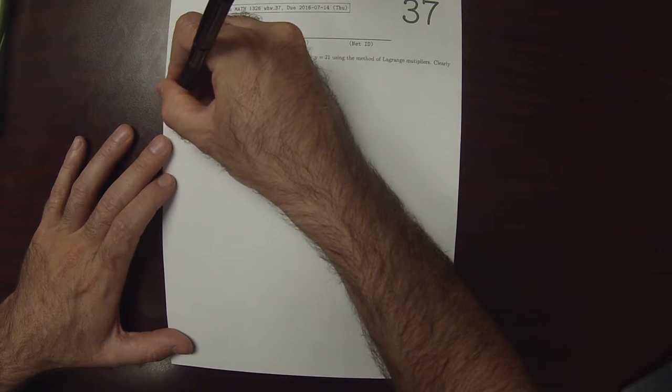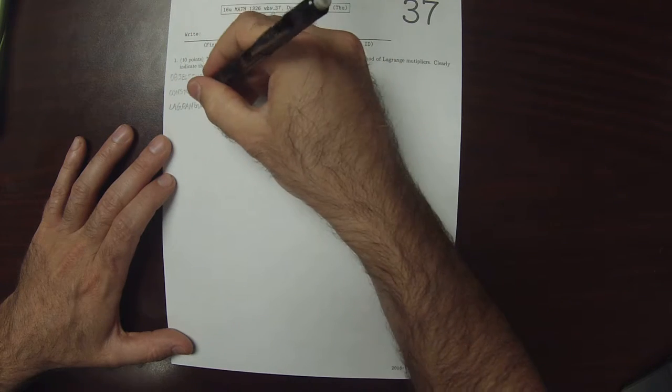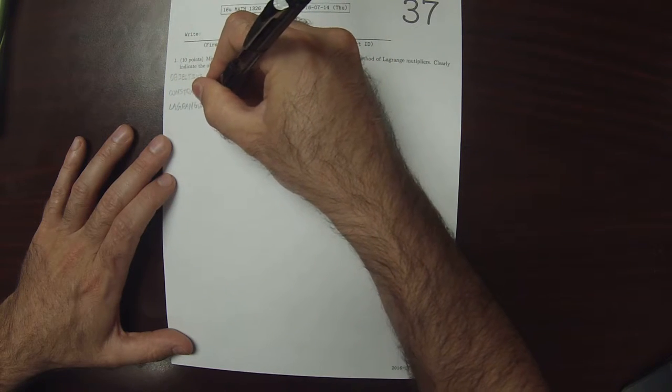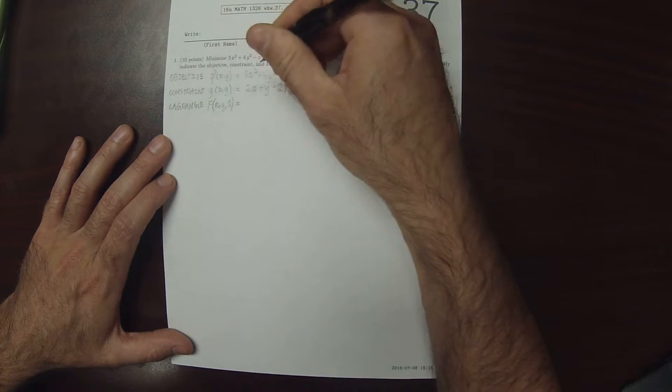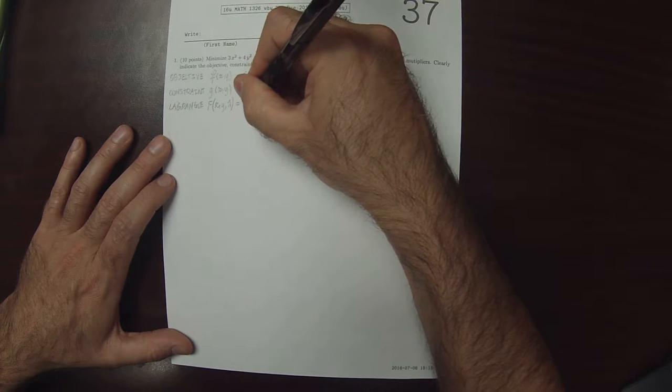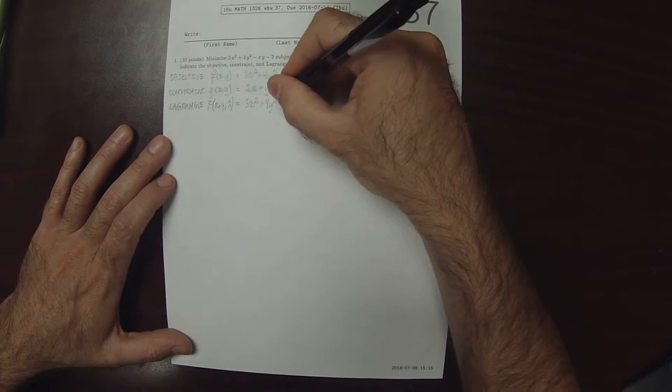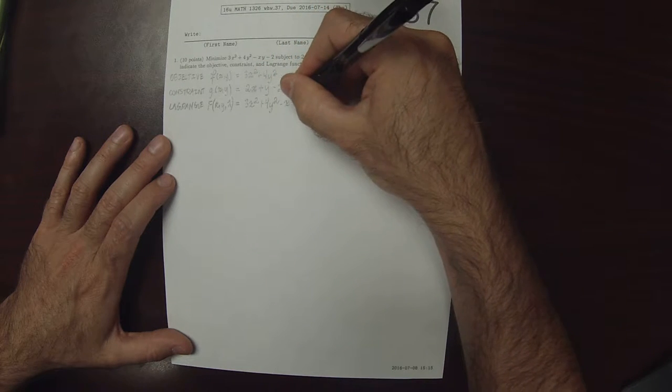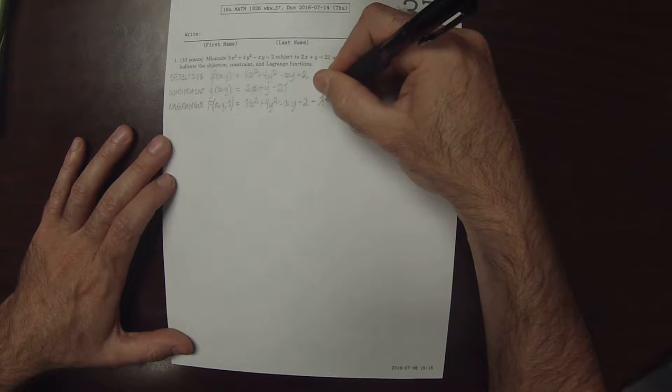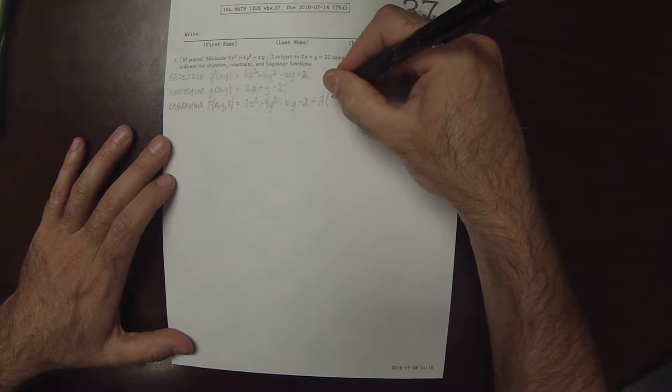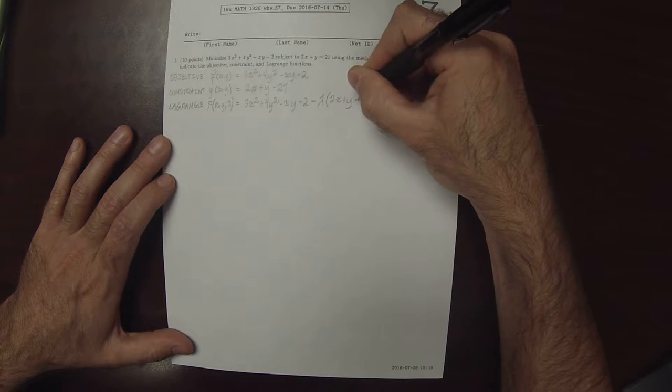And then the Lagrange function is big F of x, y, and lambda. And it is the objective, 3x squared plus 4y squared minus xy minus 2, minus a multiple of the constraint, so 2x plus y minus 21.